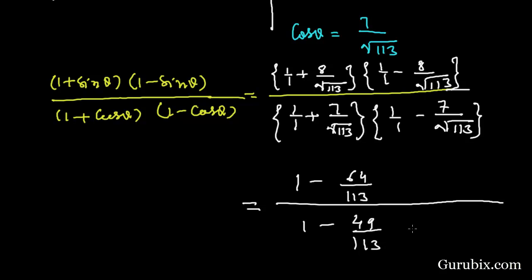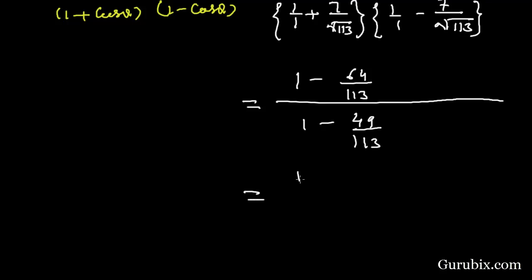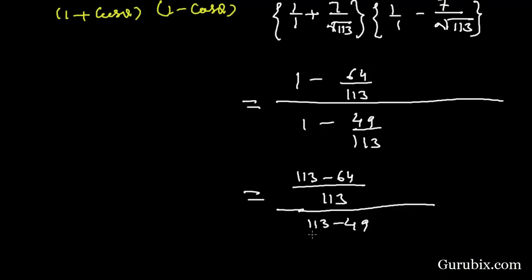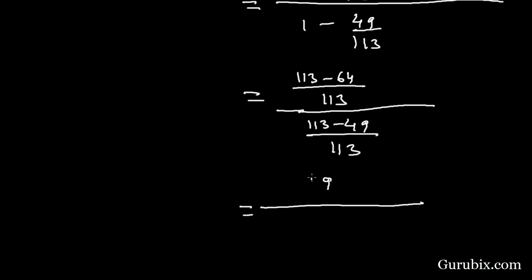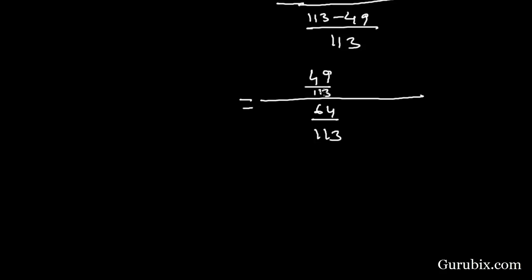This simplifies to (113 − 64)/113 over (113 − 49)/113, which equals 49/113 over 64/113. The 113s cancel out, leaving us with 49 over 64. So the answer is 49/64. Thank you.